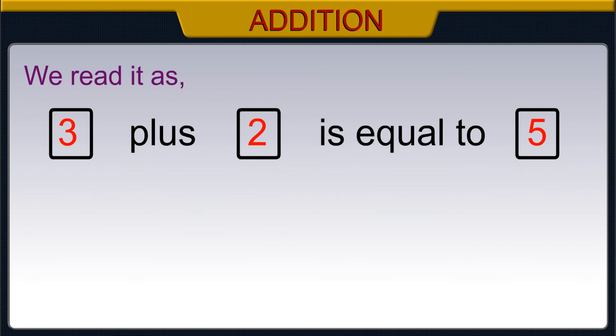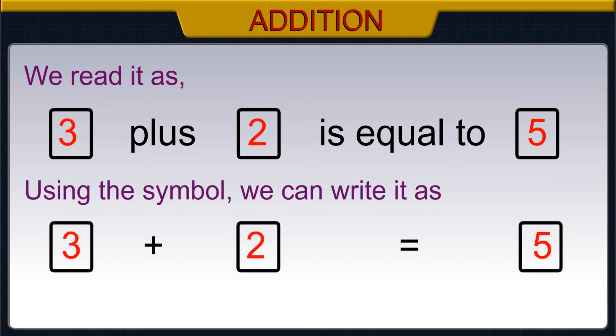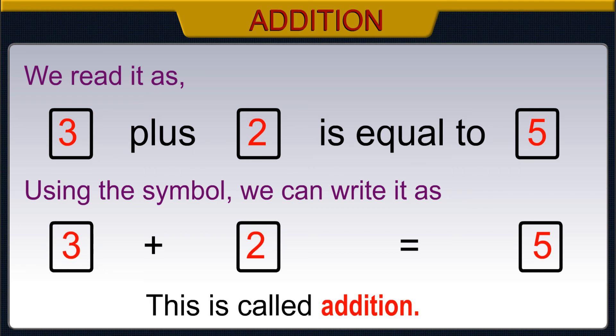We read it as: three plus two is equal to five. Using the symbol, we can write it as three plus two is equal to five. This is called addition.